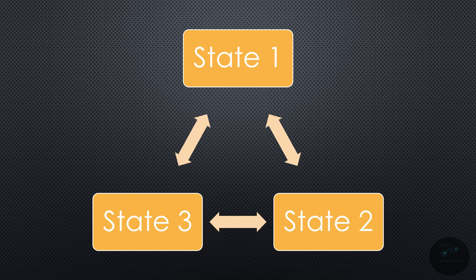Going from state 2 to state 3, and back from 3 to 2. And from state 3 to state 1, and back to 3. Now, technically, you don't need to do the back and forth for each of these. You do need to be able to return to your default state. So, let's look at an example of what that might be.